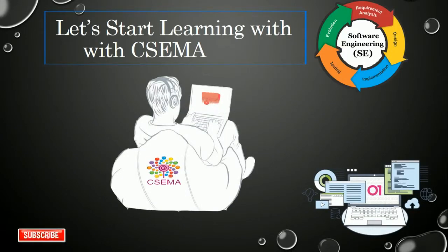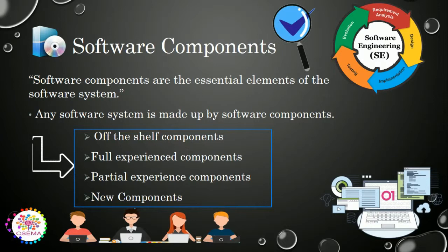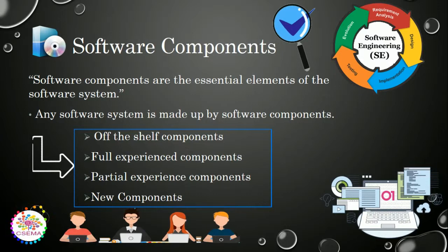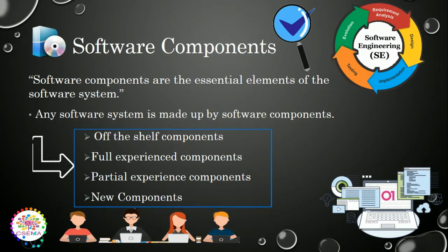Software components can be defined as the essential elements that are used to build or create a new system, or provide operations to an existing system. Software components are the tools or essential elements that provide the capability to create any system, software products — any software system is made up of software components.